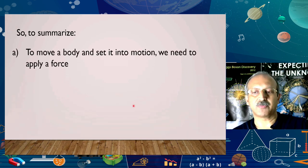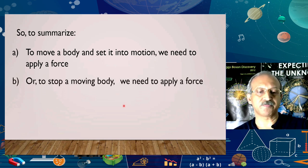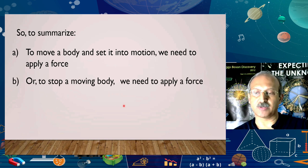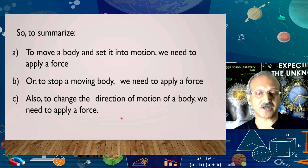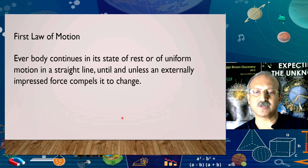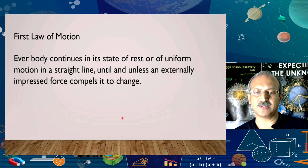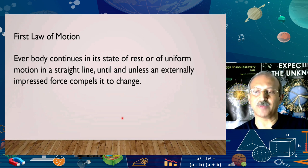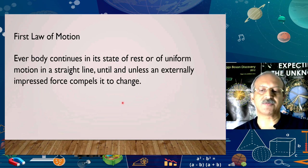To summarize what we learned in the previous class: to move a body and set it into motion, we need to apply a force; to stop a moving body, we need to apply a force; and to change the direction of motion, we need to apply a force. We then came to the First Law of Motion: every body continues in its state of rest or of uniform motion in a straight line until and unless an externally impressed force compels it to change. 'Externally impressed' means a force applied from outside the system — internal forces will never make any change.